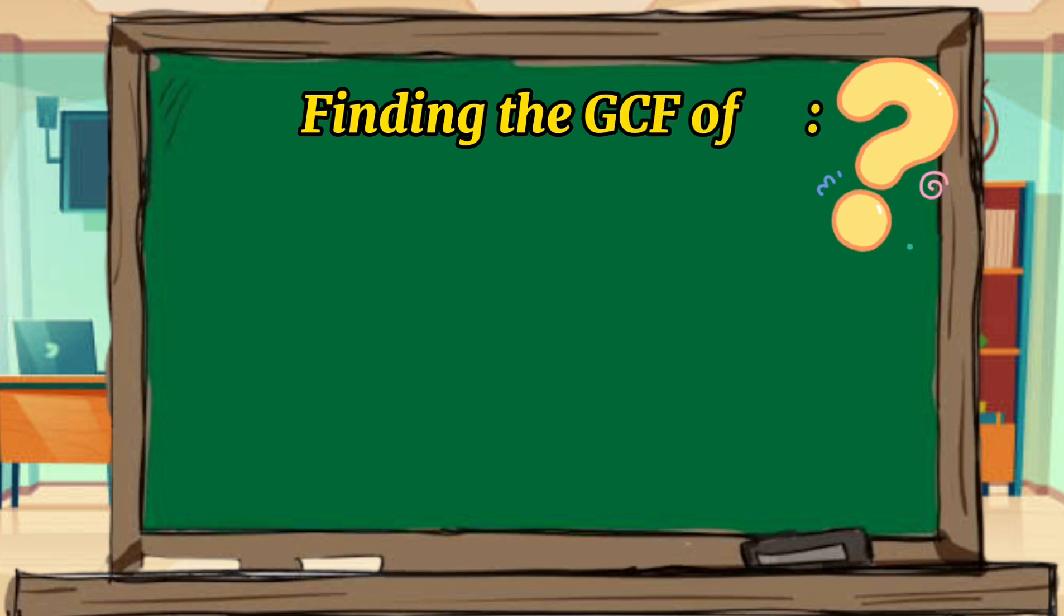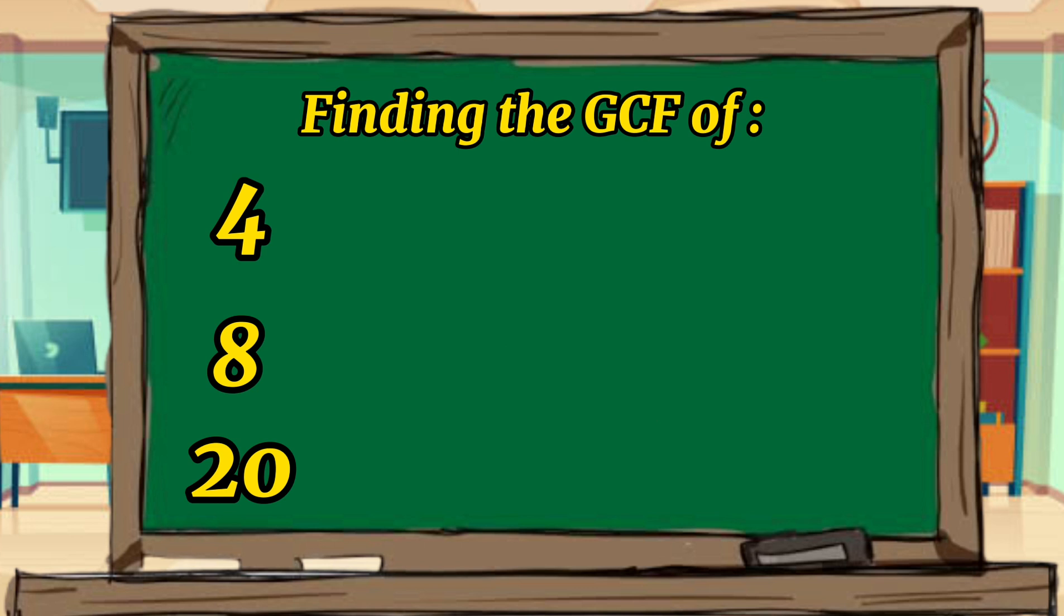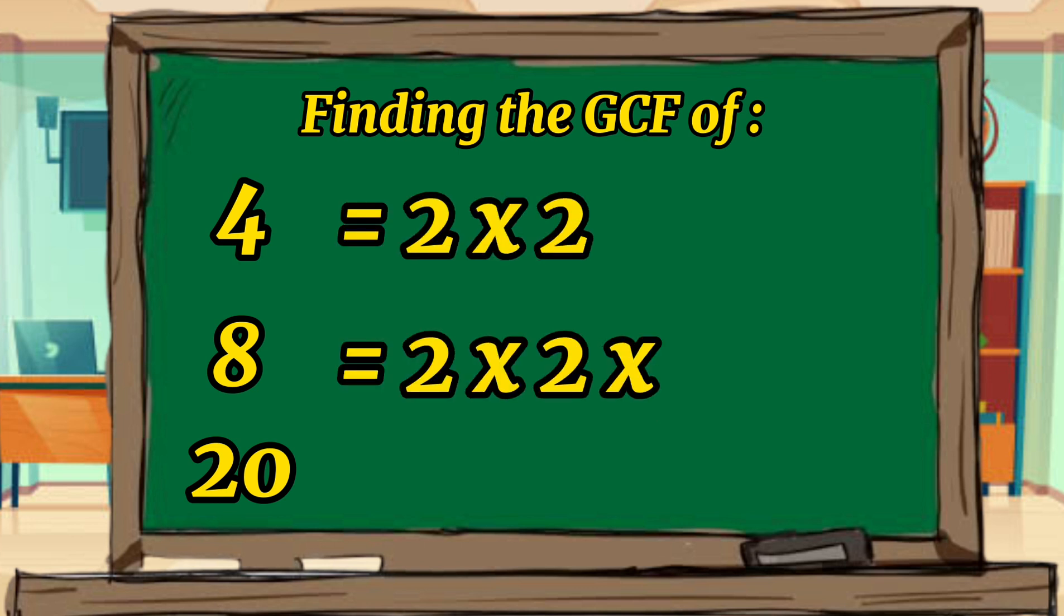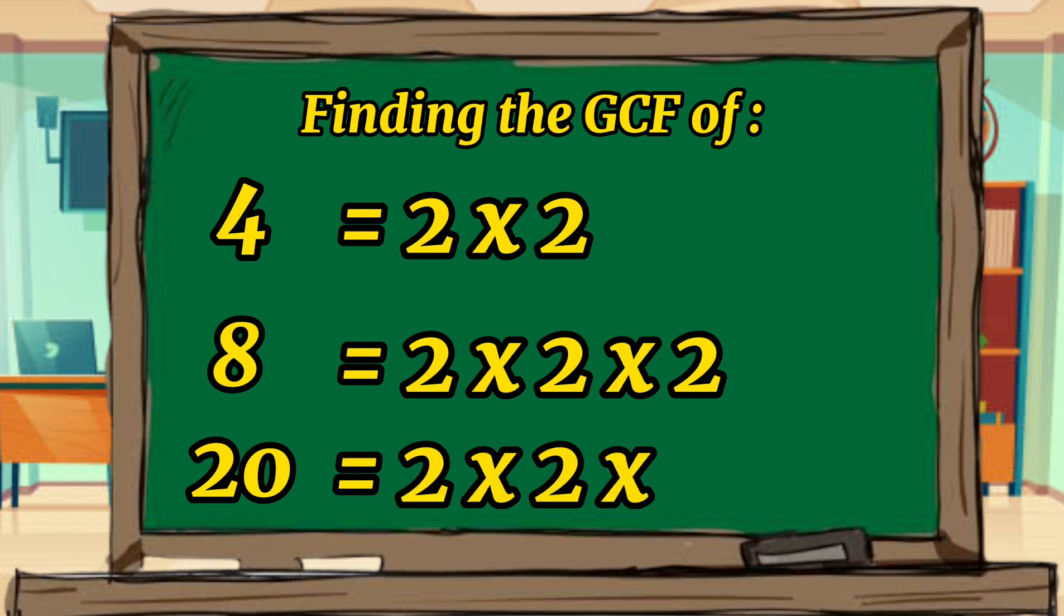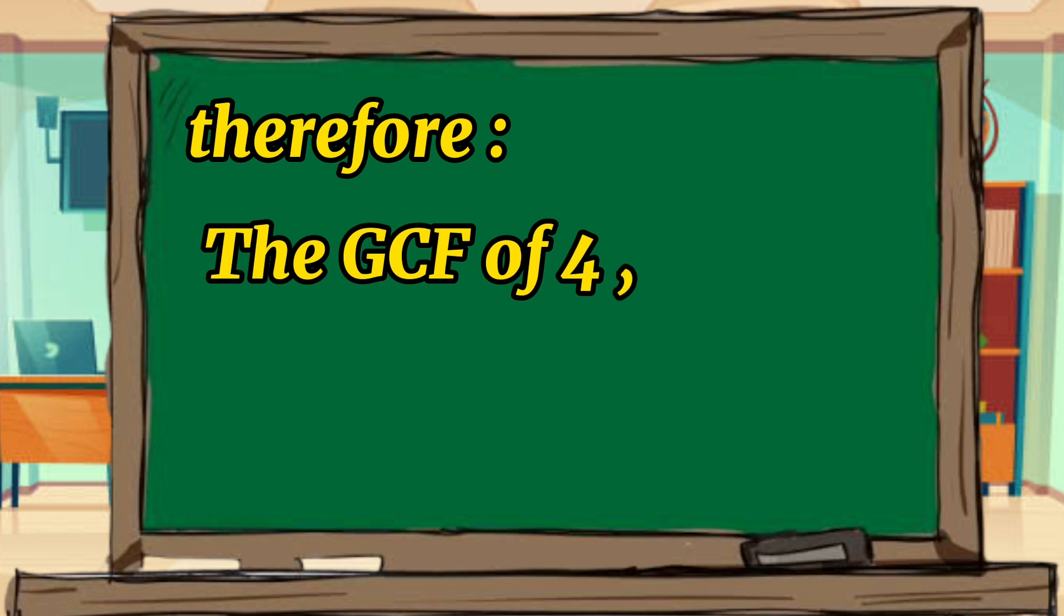Let's find the GCF of 4, 8, and 20. Let's multiply only the common prime factors, which is 2 times 2 equals 4. For 2 times 2 equals 4, 2 times 2 equals 4 times 2 equals 8, and 2 times 2 equals 4 times 5 equals 20. Therefore, the GCF of 4, 8, and 20 is 4.